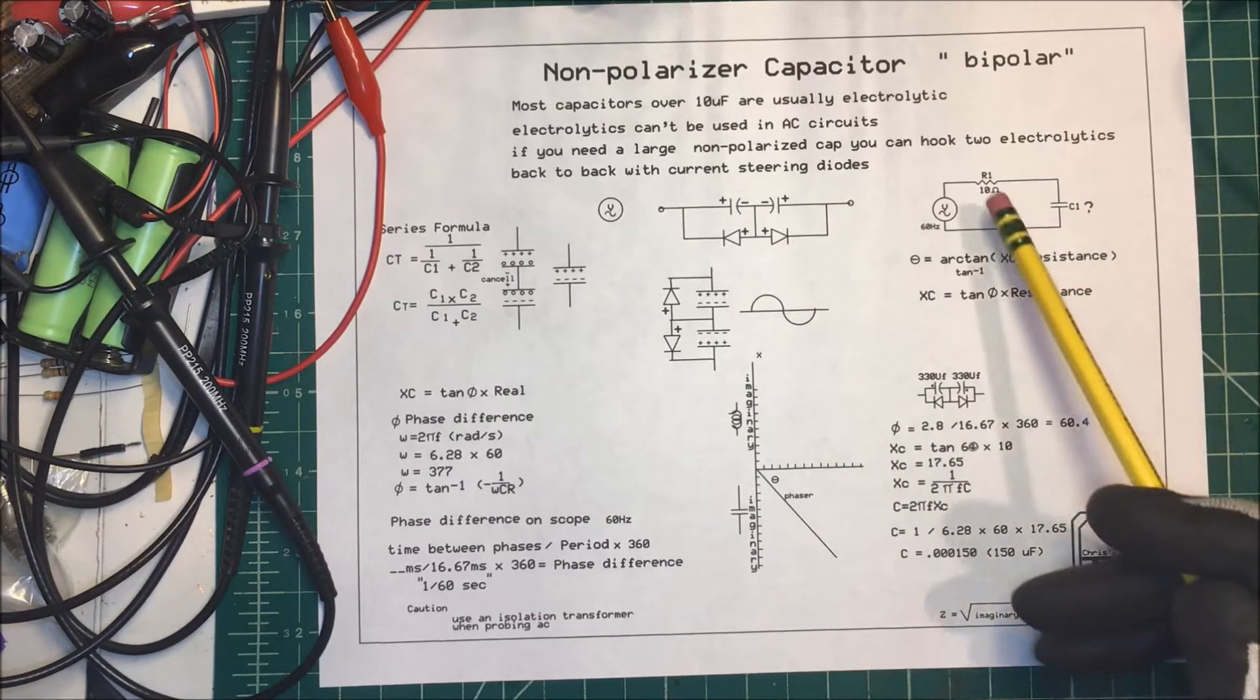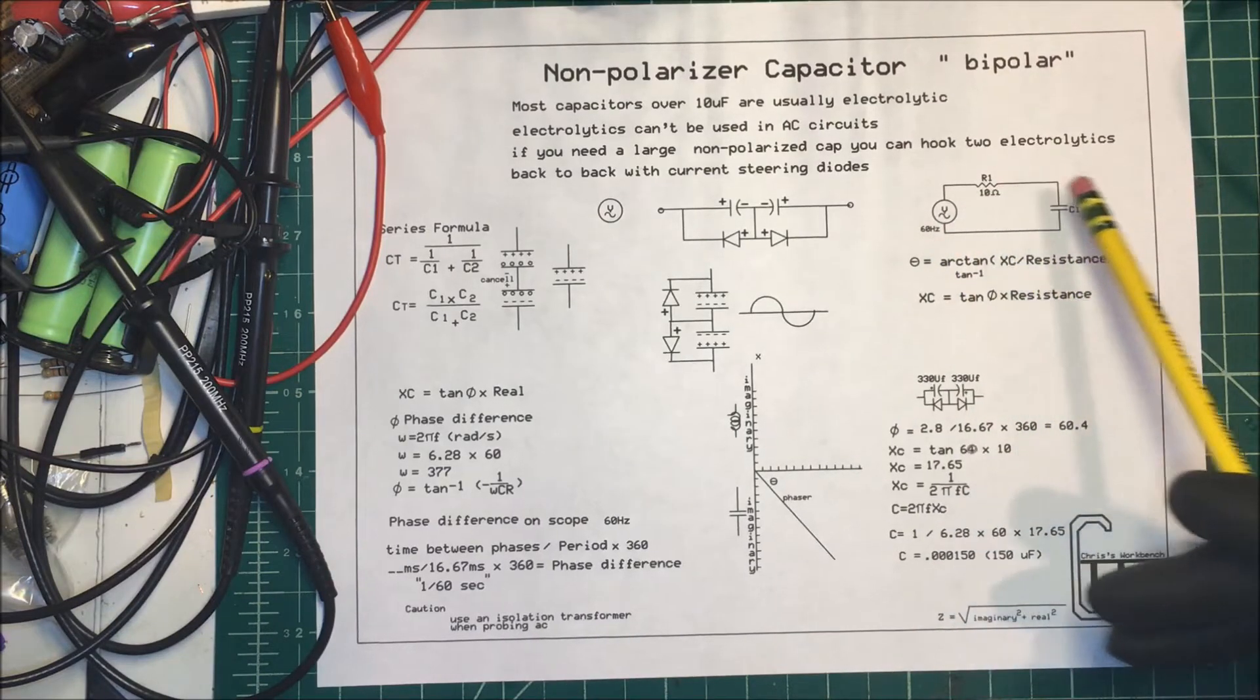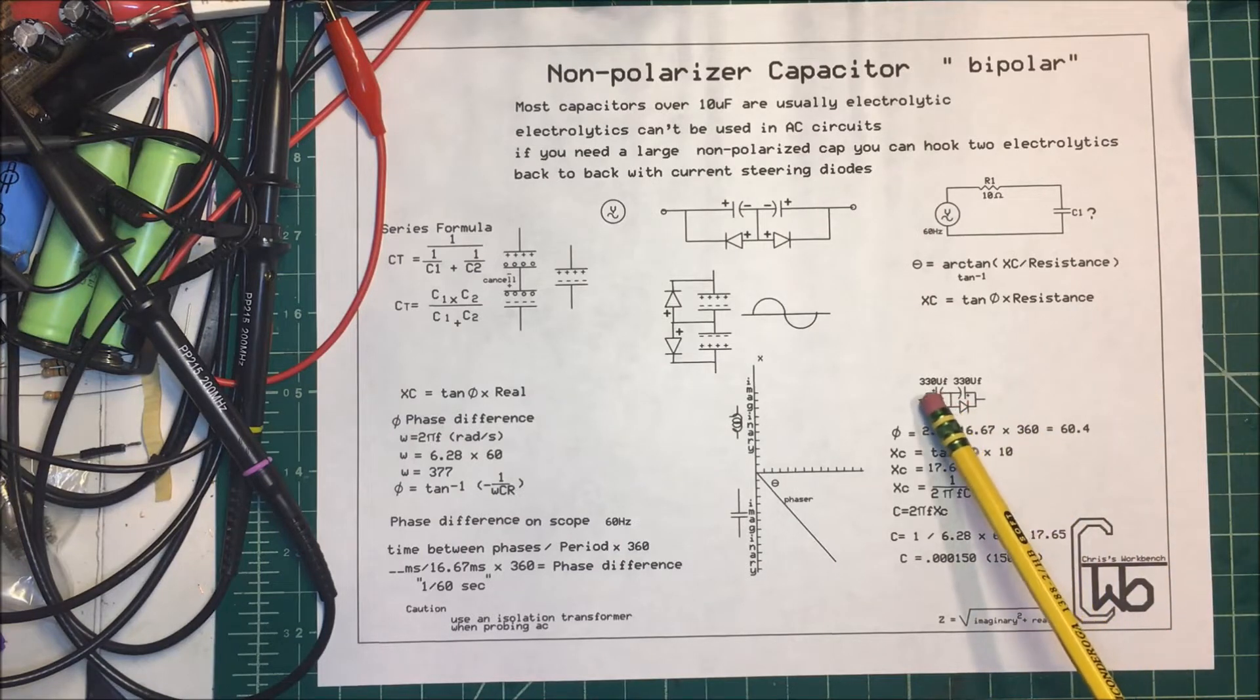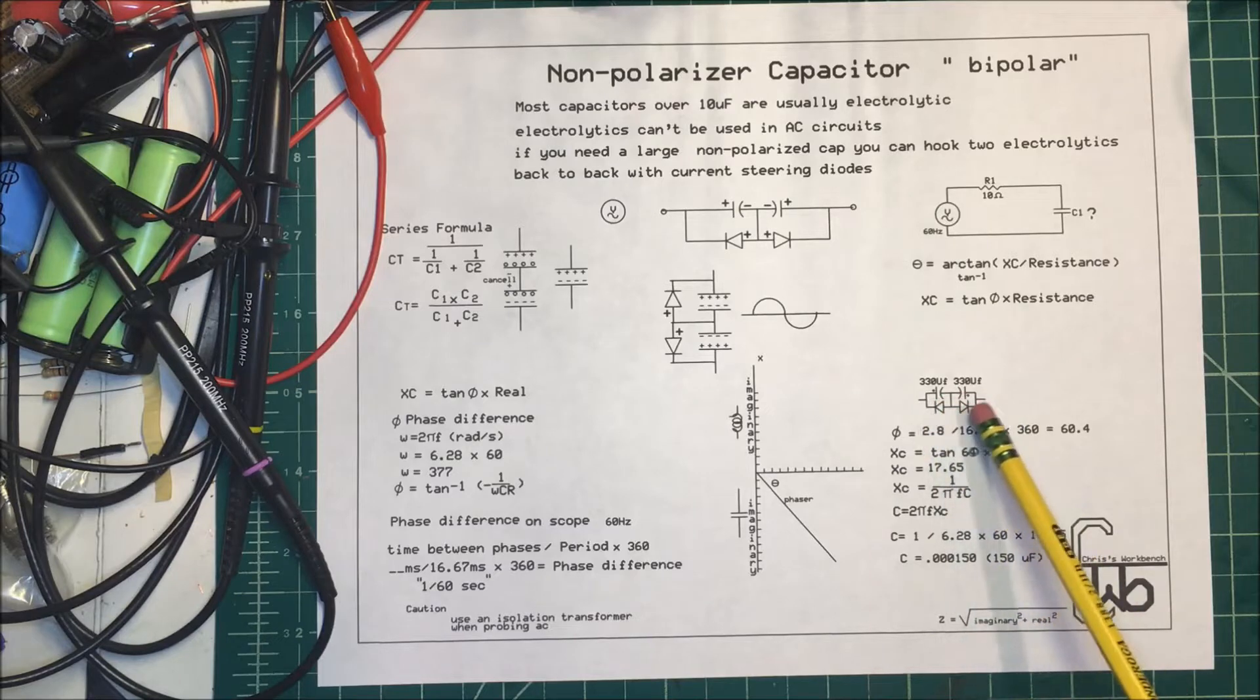What we're going to do is we're going to hook up this circuit here, we're going to have 60 hertz here, we've got a 10 ohm resistor, and an unknown capacitor over here. What I did is I used a 330 microfarad capacitor, two of them back to back, and a couple diodes.